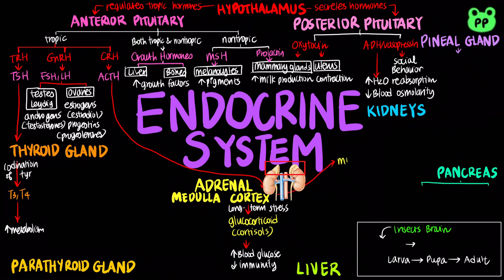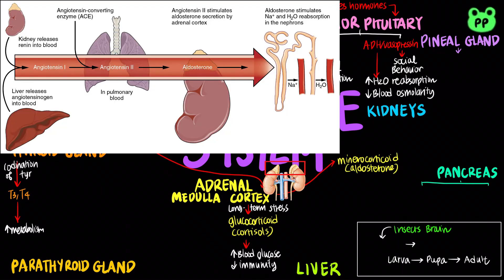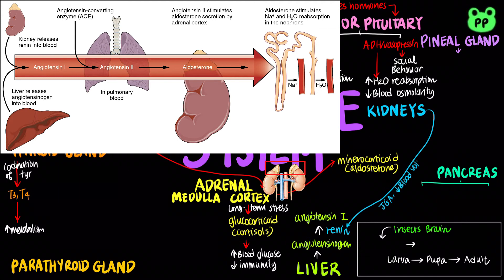The other class of corticosteroids are mineralocorticoids, including aldosterone, which is involved in the RAAS — the renin-angiotensin-aldosterone system. The liver secretes inactive angiotensinogen, which can be converted to angiotensin-1 by the protease renin. Renin is secreted by the kidneys when the juxtaglomerular apparatus, or JGA, senses a decrease in blood volume or pressure. Angiotensin-1 is then converted to angiotensin-2 by the angiotensin-converting enzyme, or ACE. Angiotensin-2 can stimulate the hypothalamus to trigger the feeling of thirst, stimulate vasoconstriction, and stimulate the adrenal cortex to release aldosterone, which increases sodium and water reabsorption in the kidneys, thus increasing blood volume and pressure.